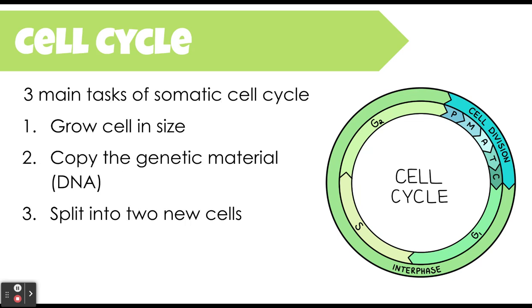There are three main tasks to complete within the cell cycle. Task number one is to make the cell larger in size, really because we're going to be copying all the contents of the cell. Task two is to copy the genetic material — that DNA, most likely in a eukaryotic cell, needs to be copied so that the new cell will have the exact same genetic information. And then lastly, we need to split that cell into two new cells.